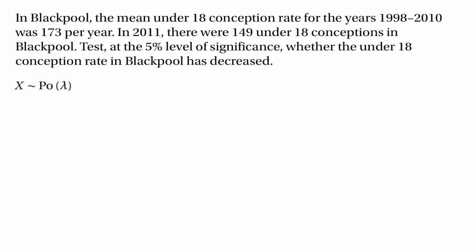Again, we're dealing with a random variable that's the number of events in a fixed interval of time, so it's reasonable to think this has the Poisson distribution. Our test statistic has the Poisson distribution with parameter lambda. The null hypothesis says lambda equals 173, because historically that's the mean under-18 conception rate. The alternative hypothesis is that lambda is less than 173, because we're investigating whether the conception rate has gone down. However, we can't use Poisson probability tables because they only cover lambda up to 10, so we need to use a normal approximation.